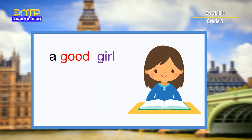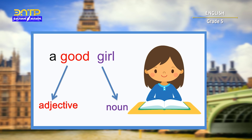A good girl. Here, 'girl' is a noun and 'good' is an adjective. As you can see, children, the adjectives usually go before nouns.